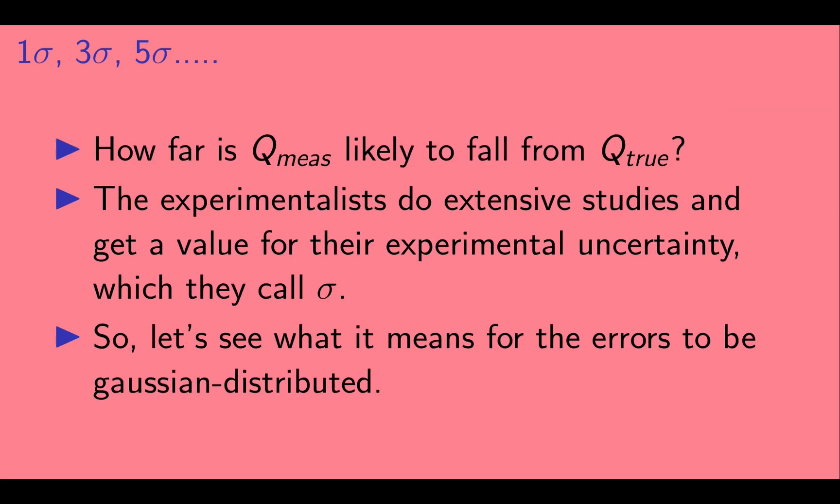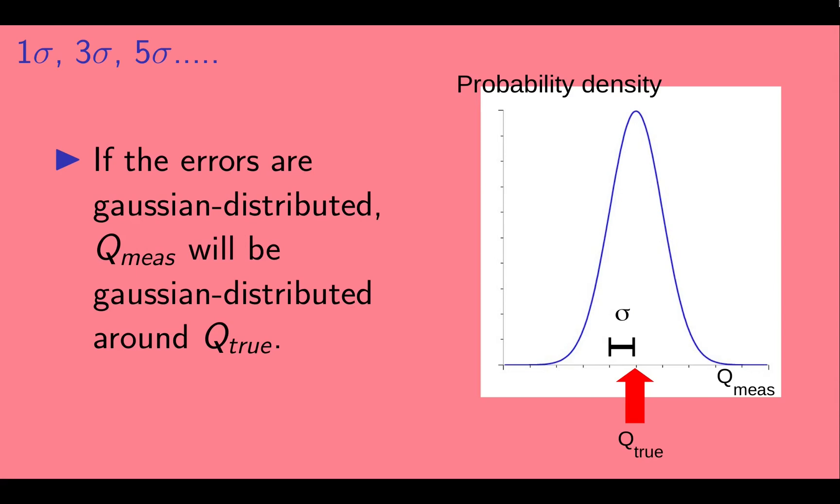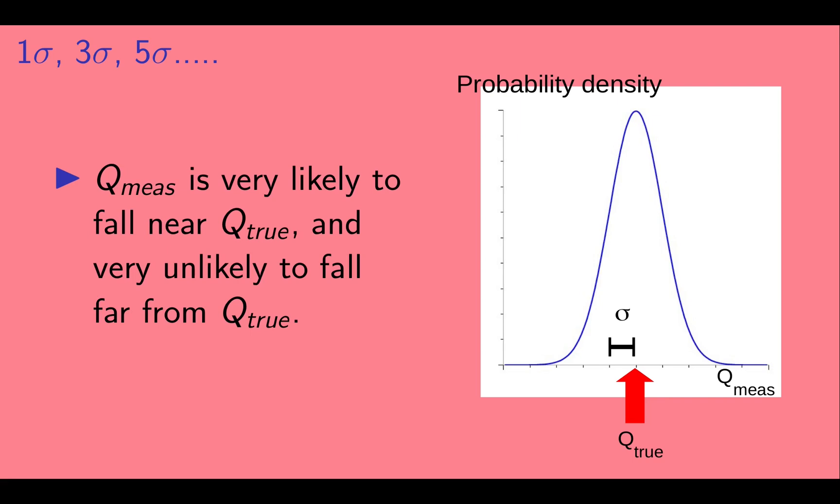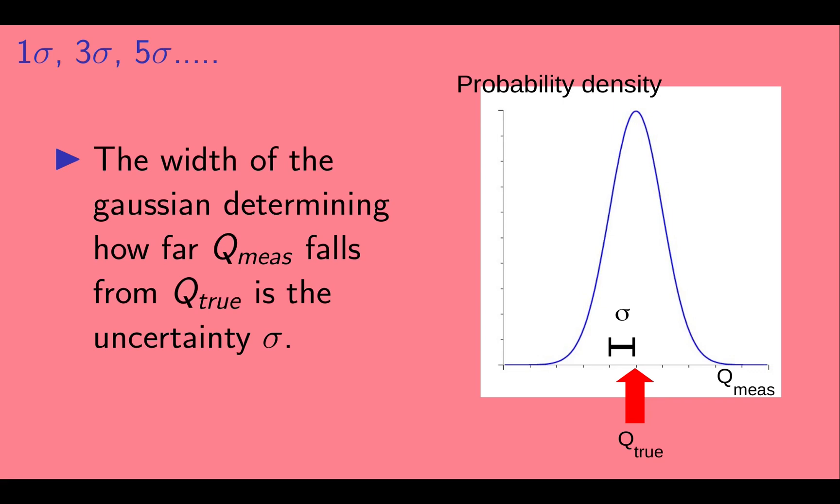Now let's ask, how far is Q measured likely to fall from Q true? The experimentalists do extensive studies and get a value for the experimental uncertainty, which is called sigma. With this, let's see what it means for the errors to be Gaussian distributed. If the errors are Gaussian distributed, Q measured will be Gaussian distributed around Q true. So on the right, we have a plot of the probability density for the result Q measured. The higher the curve, the more likely Q measured is to fall in that area. Q measured is very likely to fall near Q true, and very unlikely to fall very far away from it. The width of the peak is the uncertainty sigma determined from studies by the experimentalists.